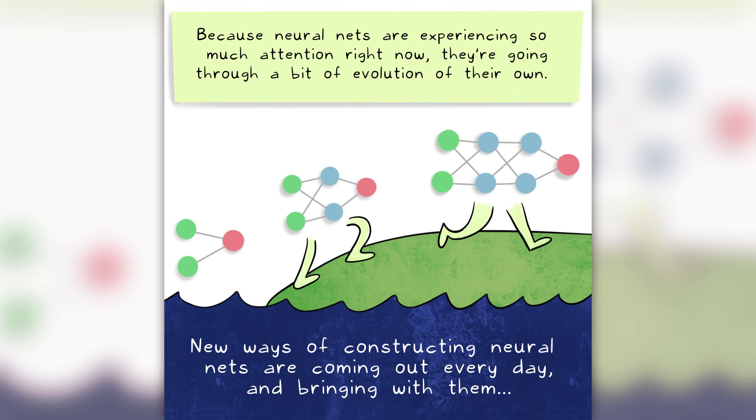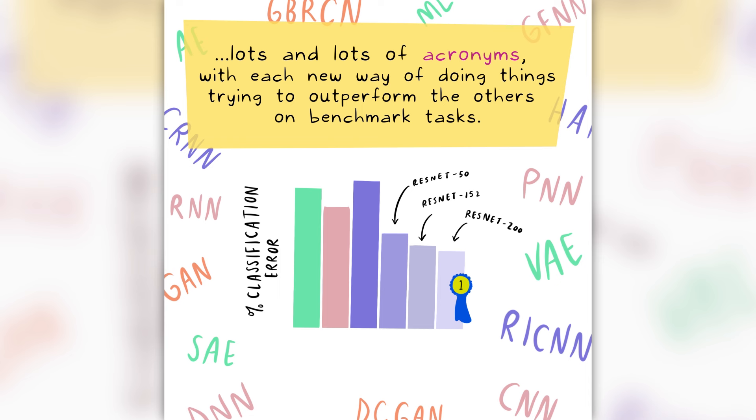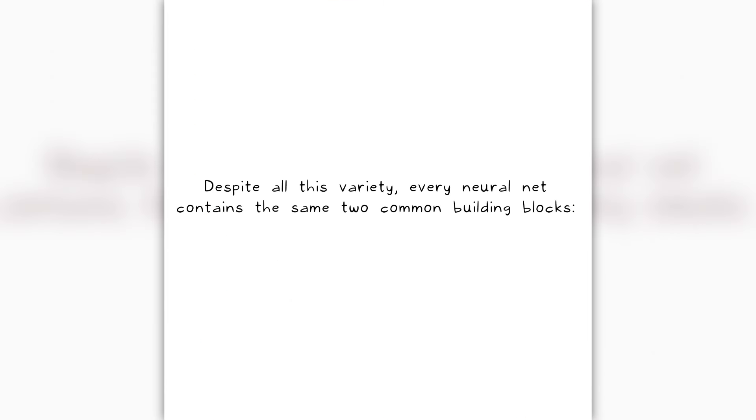Because neural nets are experiencing so much attention right now, they're going through a bit of evolution of their own. New ways of constructing neural nets are coming out every day, bringing with them lots of acronyms, with each new way trying to outperform the others on benchmark tasks.